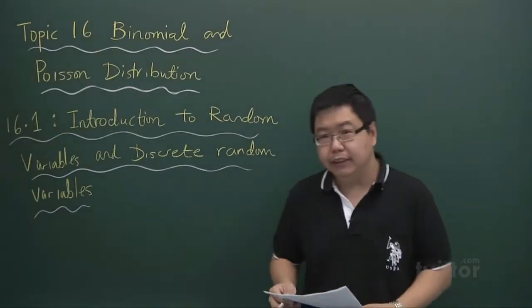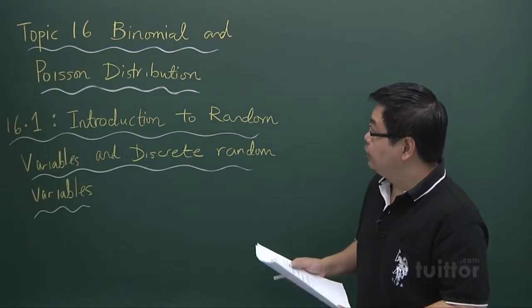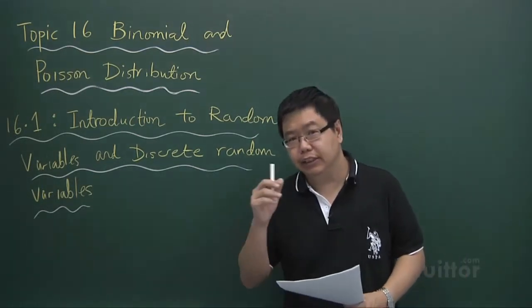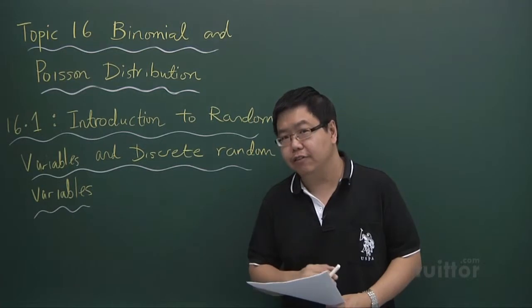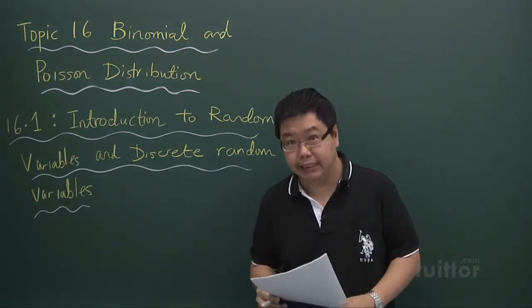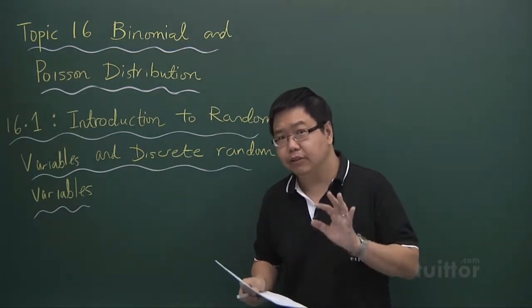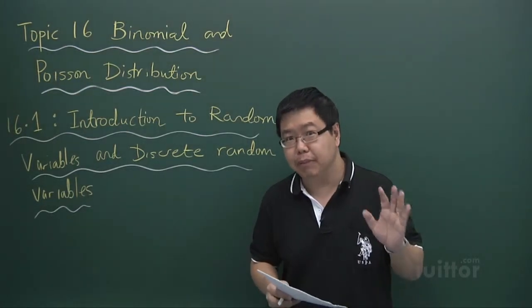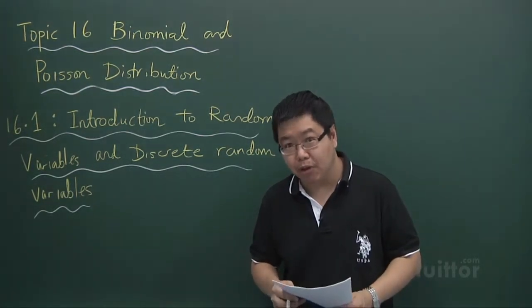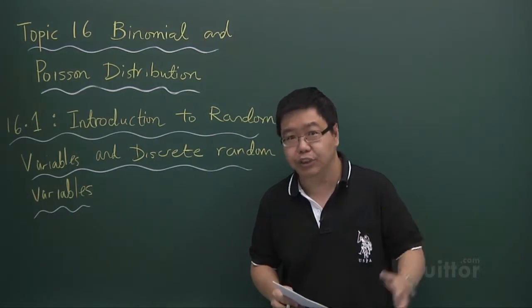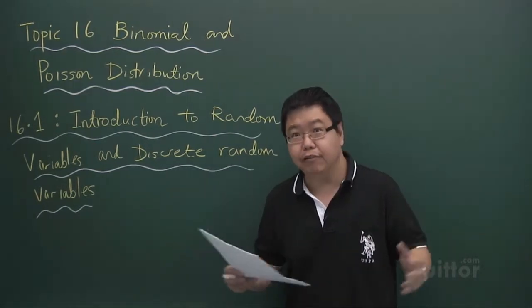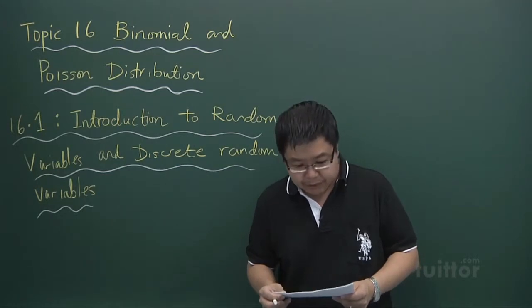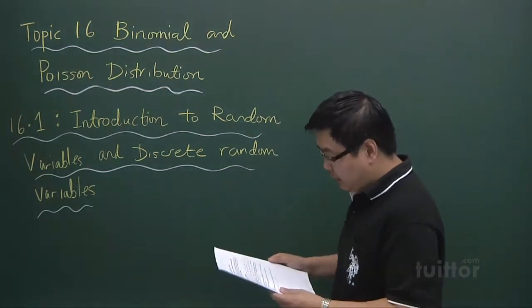Hi everyone. In this video clip on topic 16, binomial and Poisson distribution, this is actually the start of a new topic on statistics. There are a total of five chapters of statistics, together with permutation and combination as well as probability, which we have done in the last two chapters. These together form section B of paper two. Now, what is this chapter about?